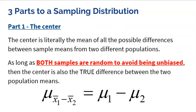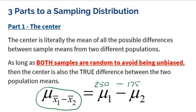To build the sampling distribution, we need three things. The first is the center — the mean of all possible differences. The mean for freshmen was 250 and for seniors was 175, which is a 75-minute difference in favor of freshmen. So I would expect any two samples — one of freshmen, one of seniors — to have a difference of about 75 minutes, though it will vary. Both samples have to be random to avoid bias; if you are consistently not getting 75, you probably have some bias.